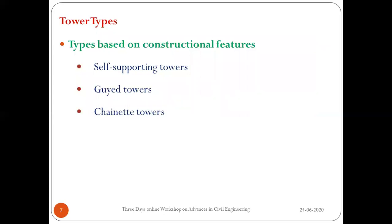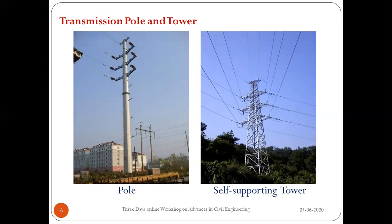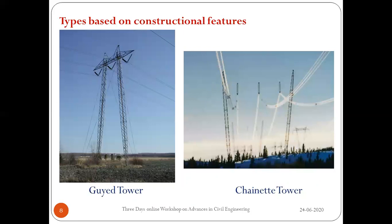Tower types based on constructional features: self-supporting towers, guyed towers, and chain towers. Self-supporting towers don't need additional support — they stand with the help of four legs and the lattices. Guyed towers have a beam at the top with two-column arrangements supported by guys on all sides, attached to the ground to prevent overturning. Chain towers use guys from which insulators are hung for power transmission, without a steel beam at the top unlike guyed towers.